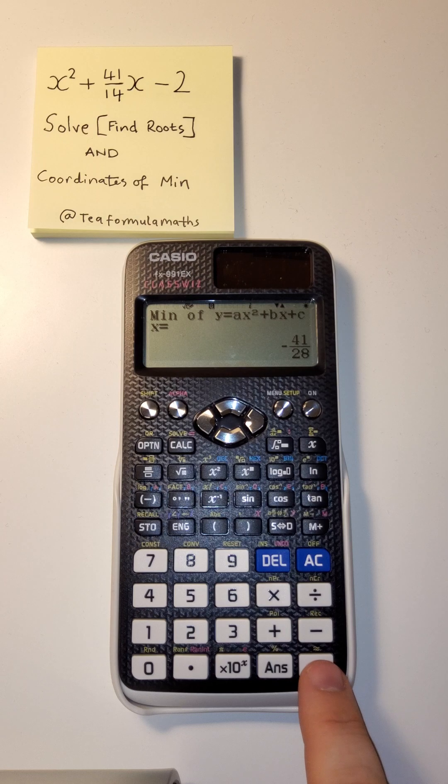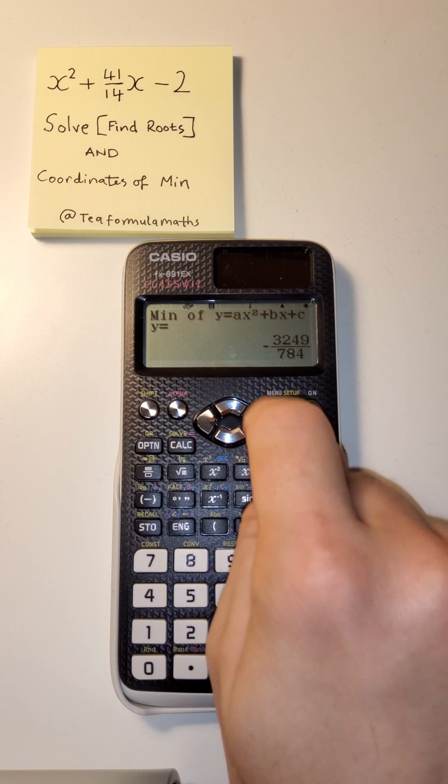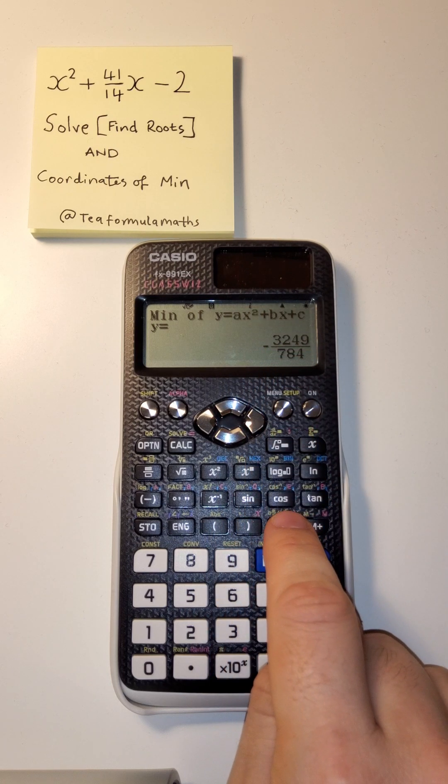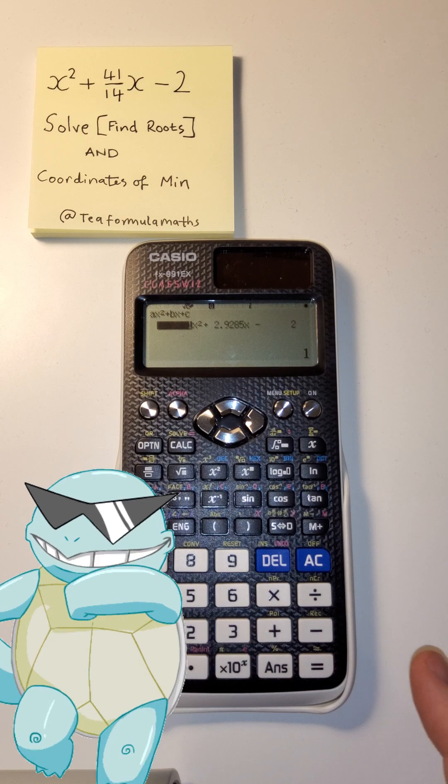We press equals again, and this is the y-coordinate. So this would be the height of the thing. In terms of how low that minimum goes, negative 4.14 if you need the decimal. You press equals again, and then you're ready to go for another one.